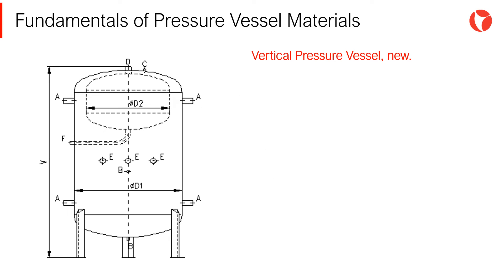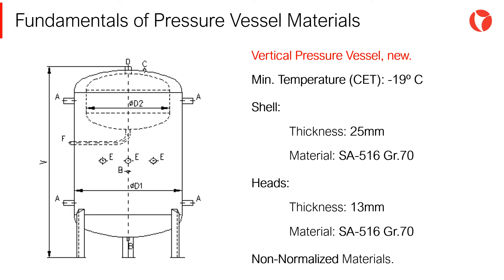Let's see this with an example. It is necessary to determine if the material selected for a new vertical pressure vessel is suitable to operate at the minimum working temperature of the project. The vessel is in new condition, where the minimum temperature of the environment, or CET (critical environment temperature), is minus 19 degrees Celsius. The shell has a thickness of 25 mm and a material of SA-516 grade 70.